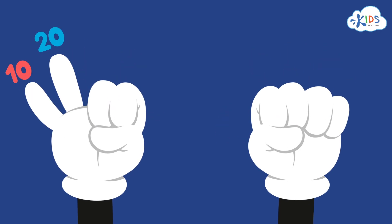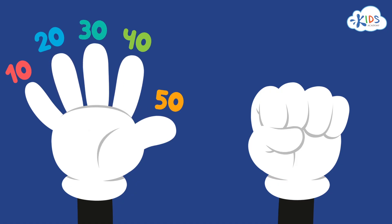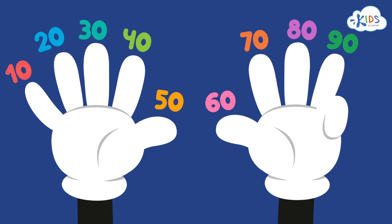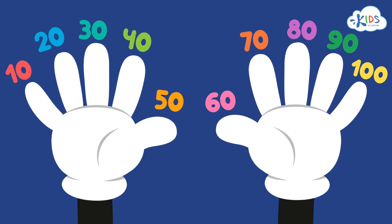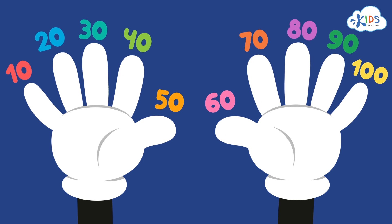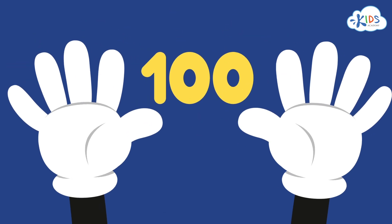Ten, twenty, thirty, forty, fifty, sixty, seventy, eighty, ninety, one hundred. You'll see we used all our fingers — it took ten times. There are ten tens inside one hundred.